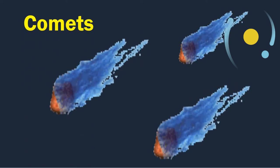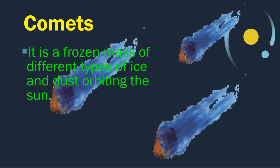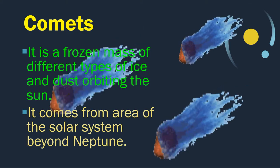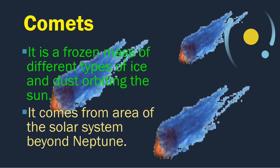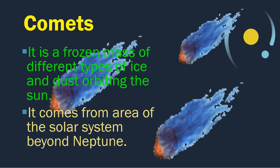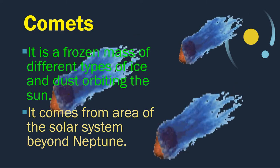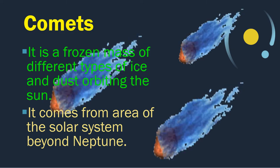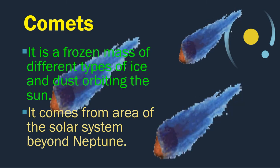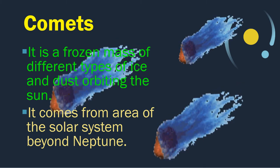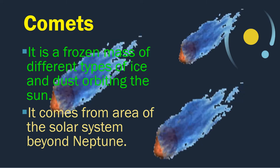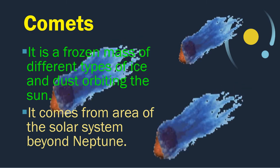A comet is a frozen mass of different types of ice and dust orbiting the Sun. It comes from an area of the solar system beyond Neptune. A comet heats up and loses dust and rocky matter each time it orbits the Sun. These loose pieces remain in the comet's orbit. When these pieces collide with Earth's atmosphere, they become meteors.